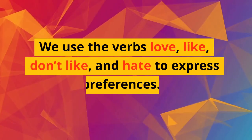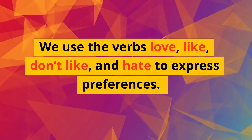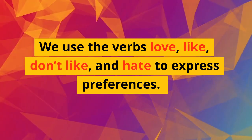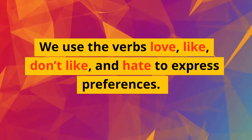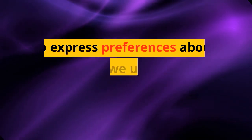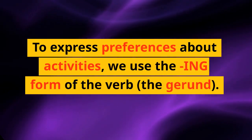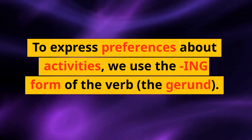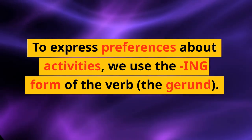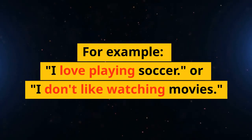We use the verbs love, like, don't like, and hate to express preferences. To express preferences about activities, we use the -ing form of the verb — the gerund. For example: I love playing soccer, or I don't like watching movies.